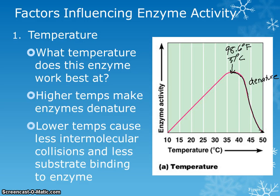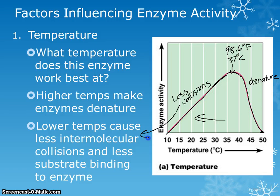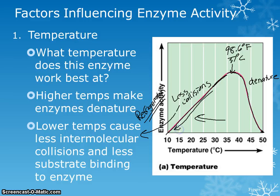If you cool the enzyme down, what happens is the molecules aren't bouncing around as often, so there are fewer collisions happening. That means the enzyme is not interacting with substrates as much. This is why you have a refrigerator — you're cooling down the enzymes of decomposers so they can't break down your food as quickly, and your food stays fresher longer.